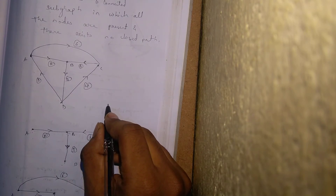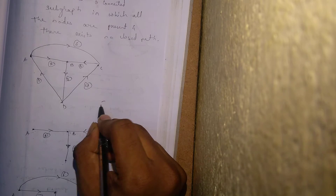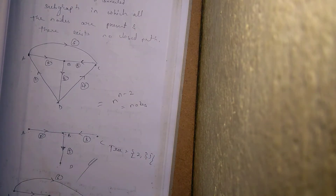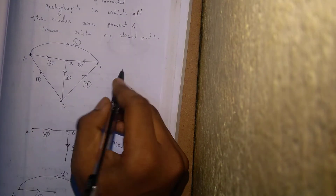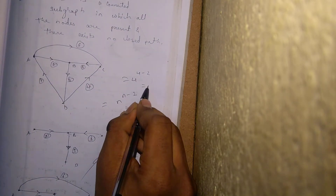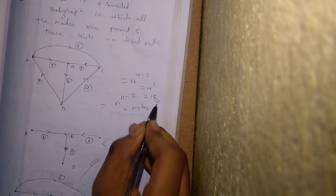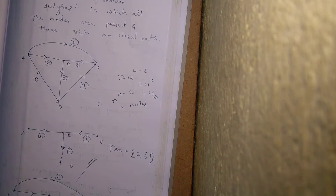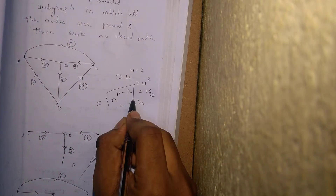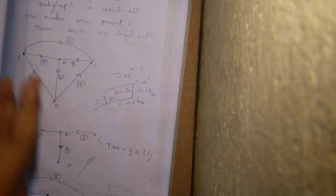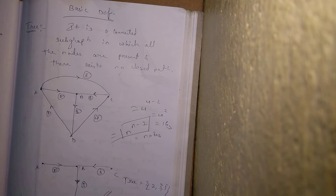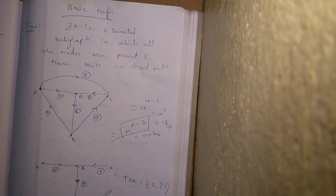The number of trees that can be drawn for a given graph is n^(n-2), where n equals the number of nodes. Here the number of nodes is four, so 4^(4-2) = 4^2 = 16. So sixteen trees can be formed for this given graph. That is all about the tree definition.